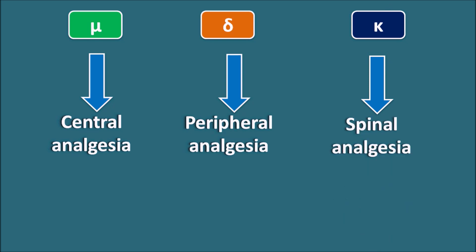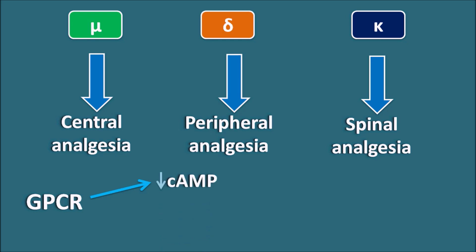The mu-receptors are mainly responsible for central analgesia, delta-receptors for peripheral analgesia, and kappa-receptors for spinal analgesia. Opiates can produce analgesic action at central, spinal, as well as peripheral levels. But most of the opiates are acting on the mu-receptors which produce high analgesia but at the same time produce euphoria, respiratory depression, as well as addiction. All these opiate receptors are G-protein coupled receptors coupled with a decrease in cyclic AMP.